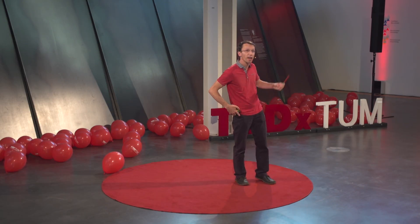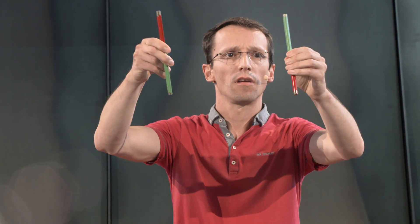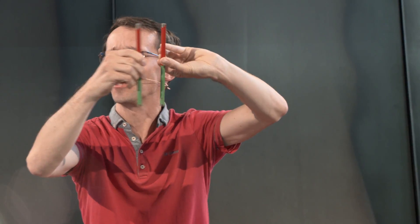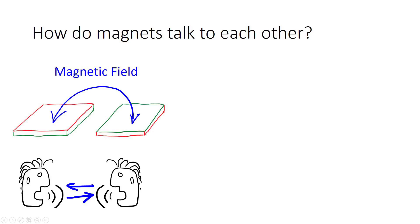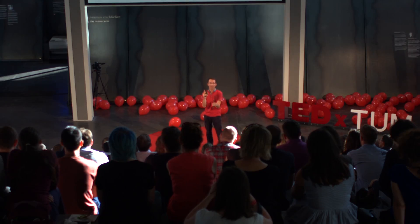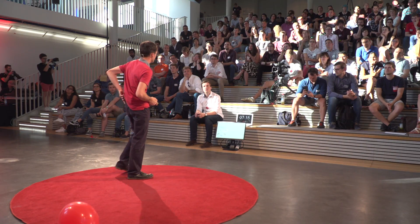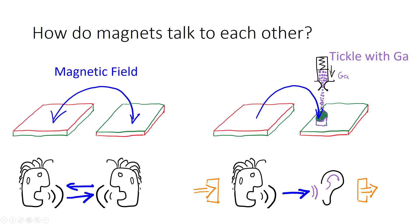But how do magnets talk to each other? Two magnets with opposite poles repel — very unstable. Turn them around and they click together. But both magnets are talking to each other by magnetic fields — we cannot use that for computation. So we take gallium ions again and tickle one area, creating one speaker and one listener. The speaker talks to the listener. That's very important because we now have an input and an output — needed for computation.